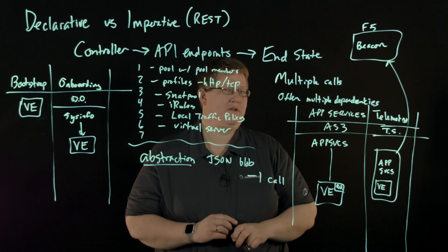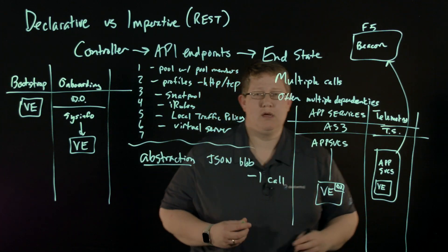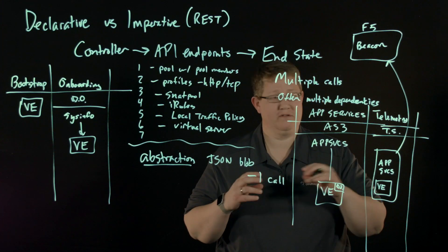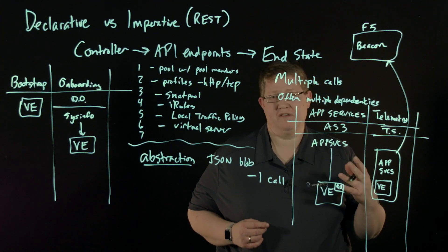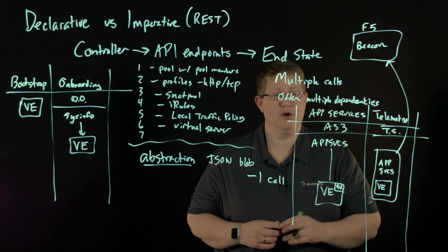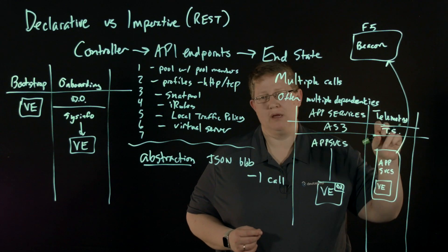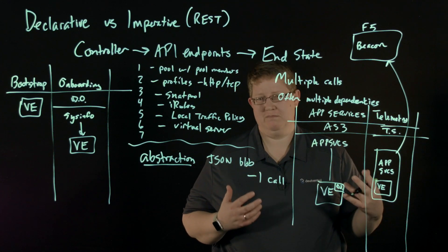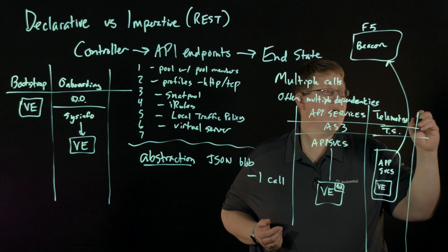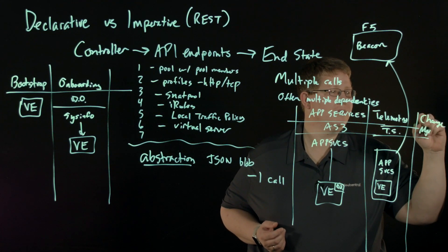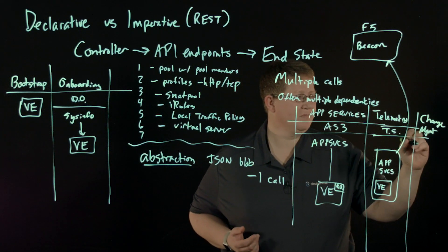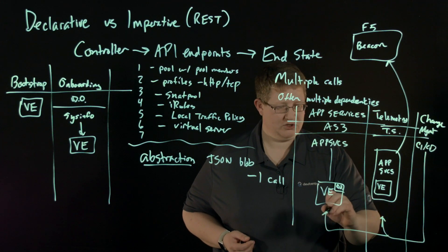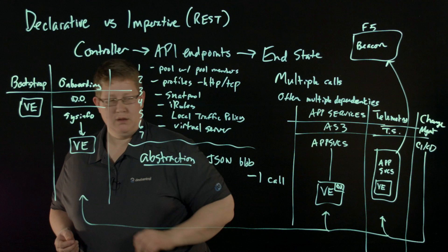All of these different declarative interfaces are deployed to the system, and the configuration for that particular declaration exists until you change that declaration and resend it. You don't want to be changing any of the nerd knobs within those configurations on the device, because then the source of truth really gets muddled. Over on the side, you have your change management — this is where you bring in your CICD tool chains and then you can come back and change any of this along the way as necessary.